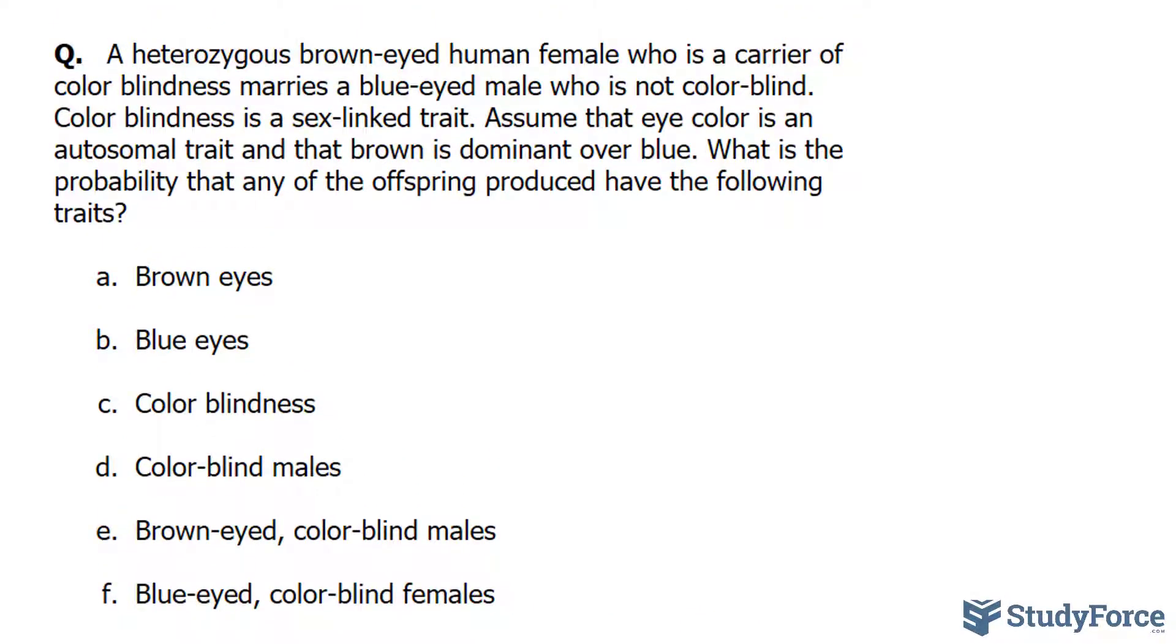The first thing I want to do is write down the genotype for the female and for the male. For the female, we have two X chromosomes. Since the female is a carrier, this means that she does not have colorblindness.